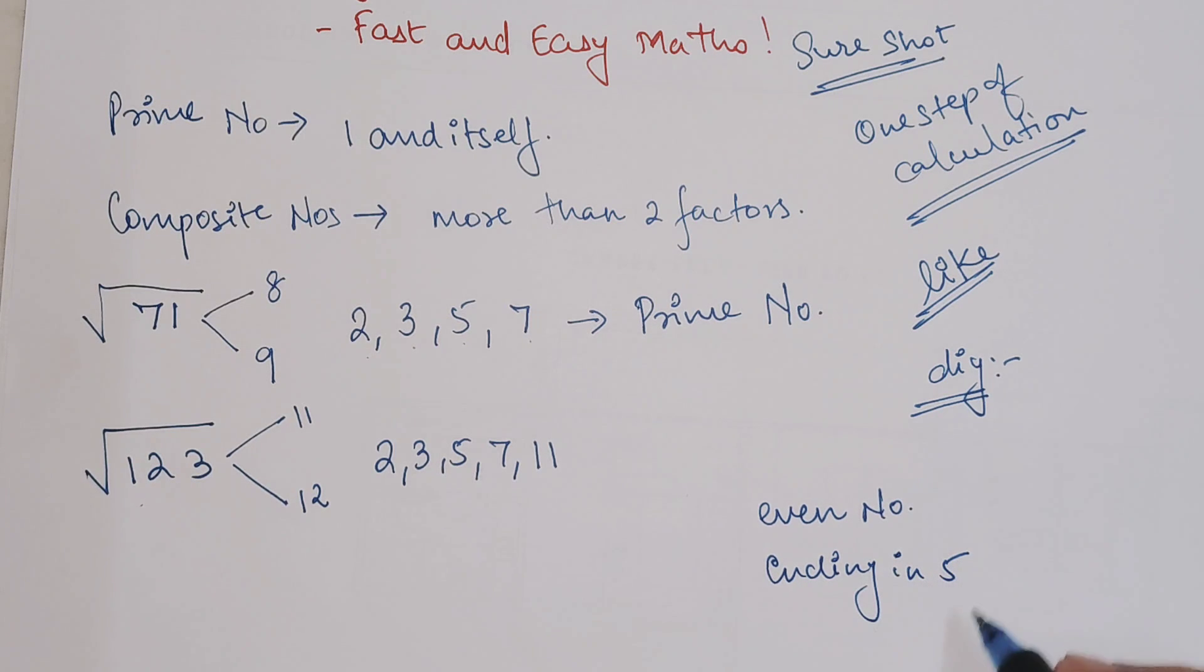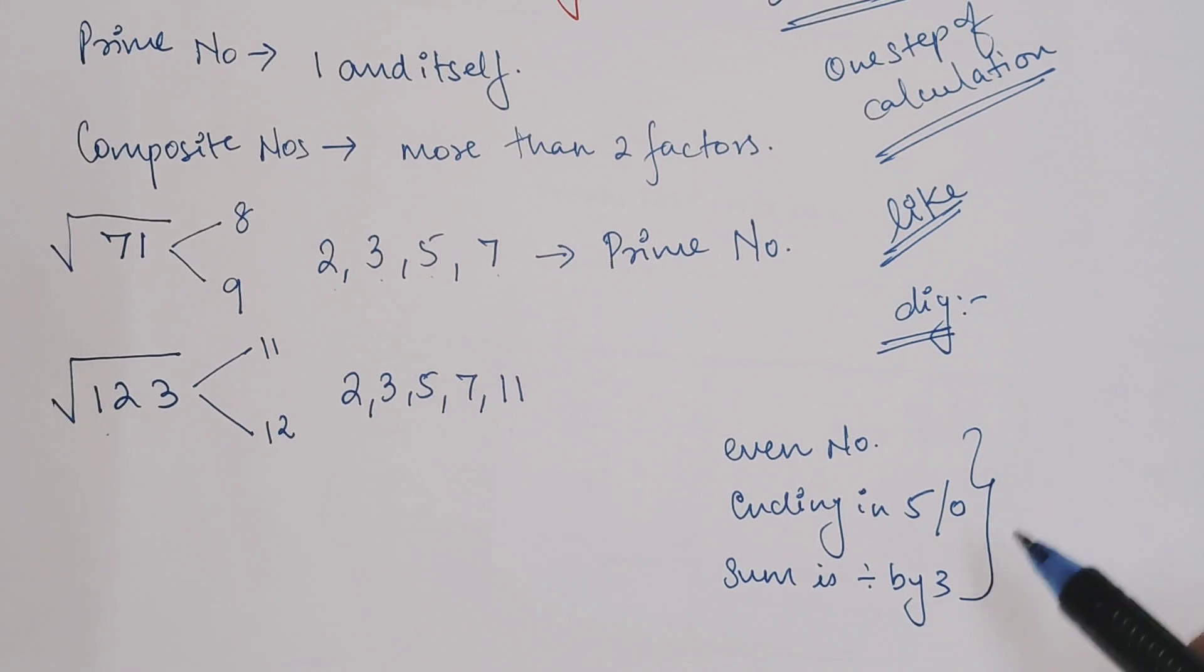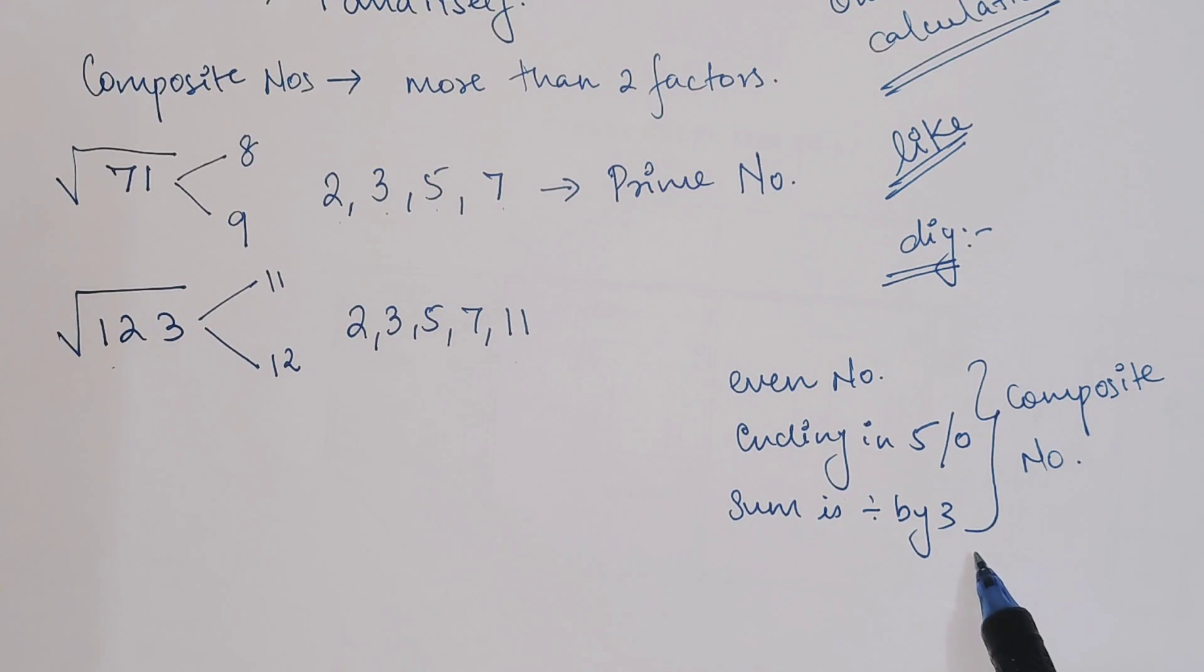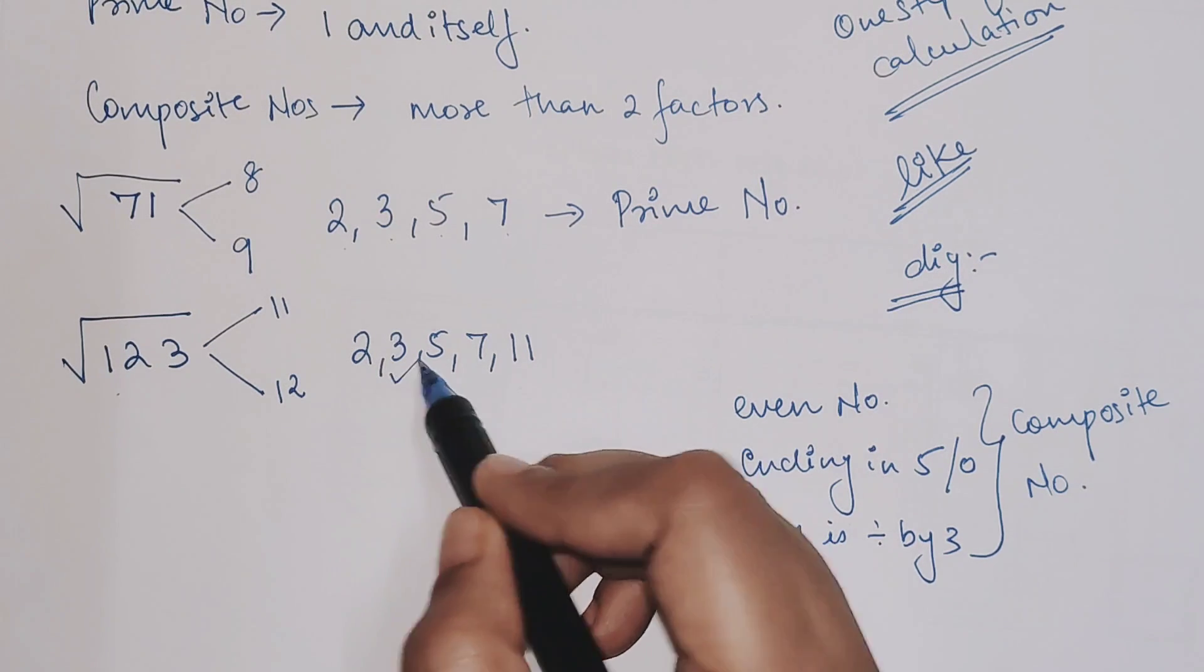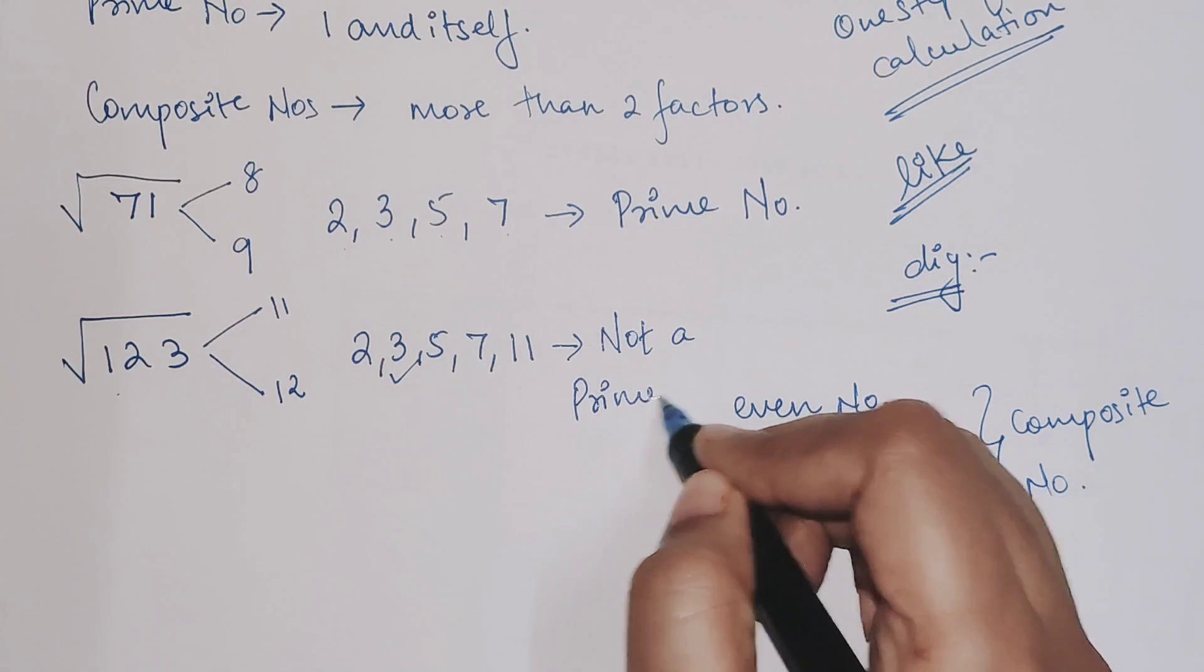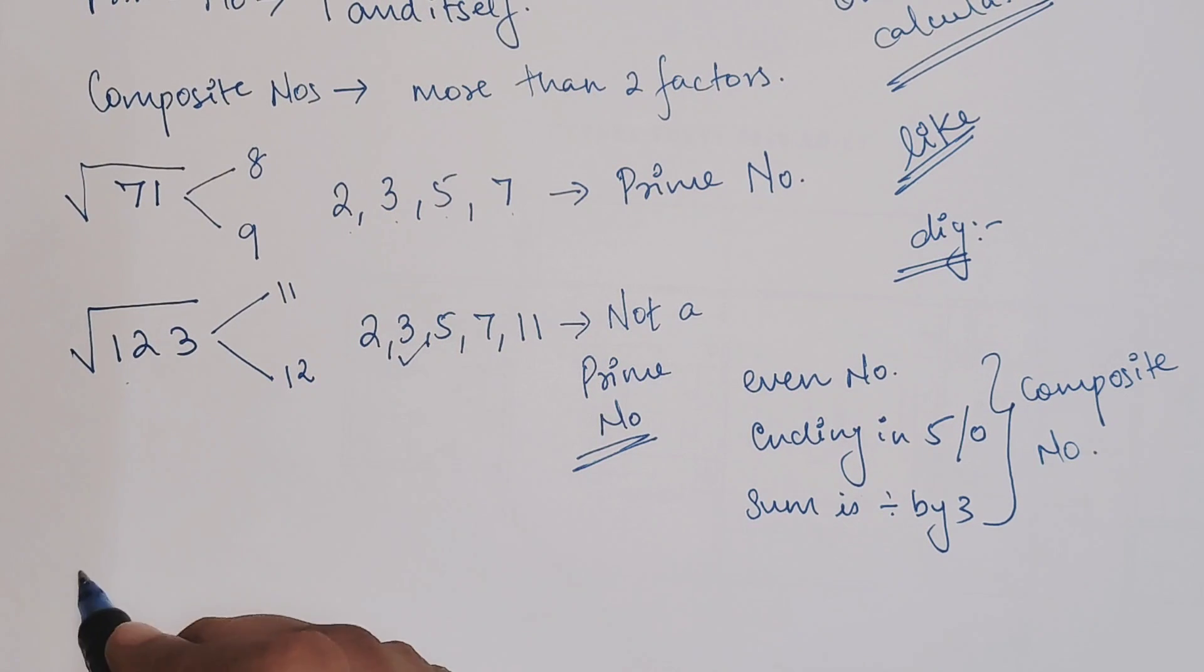There are a few things you need to always remember: if the number given is even, or if it's ending in 5 or 0, or if the sum total is divisible by 3 - these are the first three prime numbers. So if you see these criteria, you can directly determine if it's composite. In this case, 1 plus 2 plus 3 gets you 6, which is divisible by 3, so this is not a prime number.